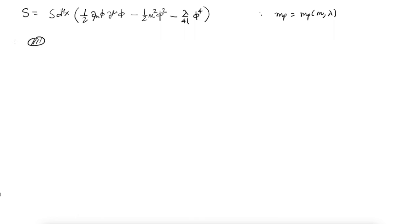To find the physical mass, I should look at the two-point function and find where its pole is — the location of the pole is the physical mass. To lowest order, this is the propagator i/(p² - m²). So, m_physical to lowest order is just m.